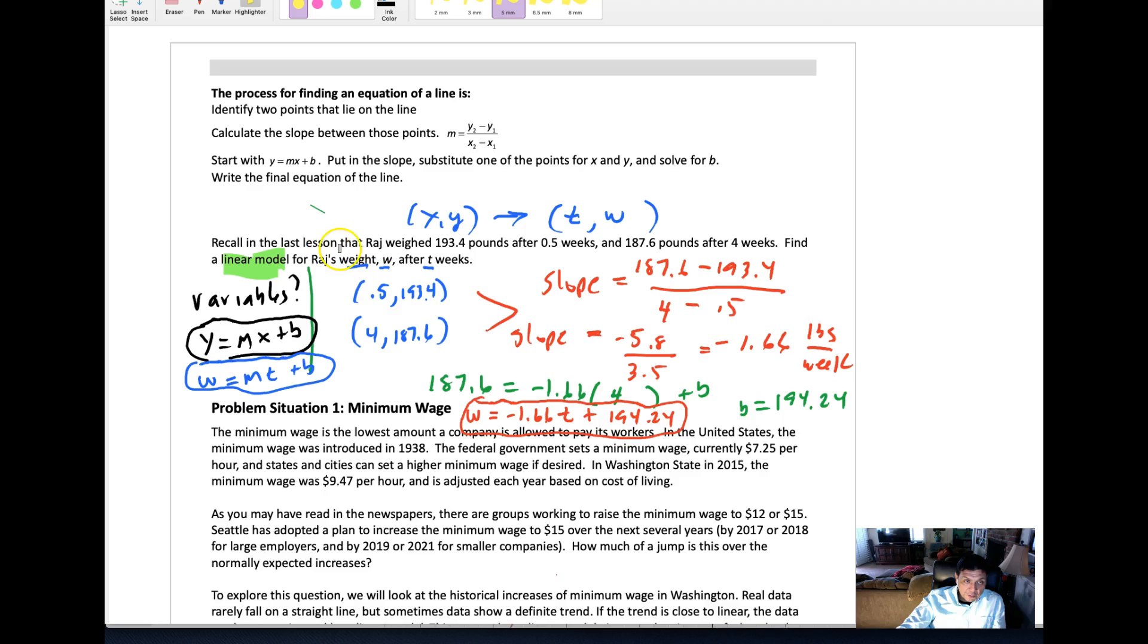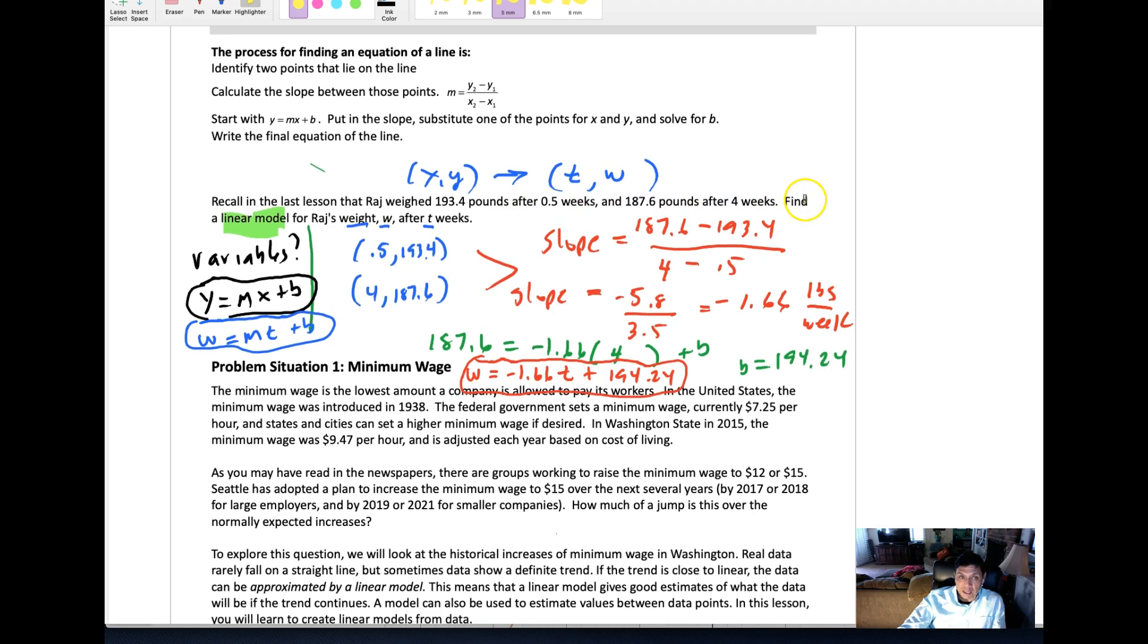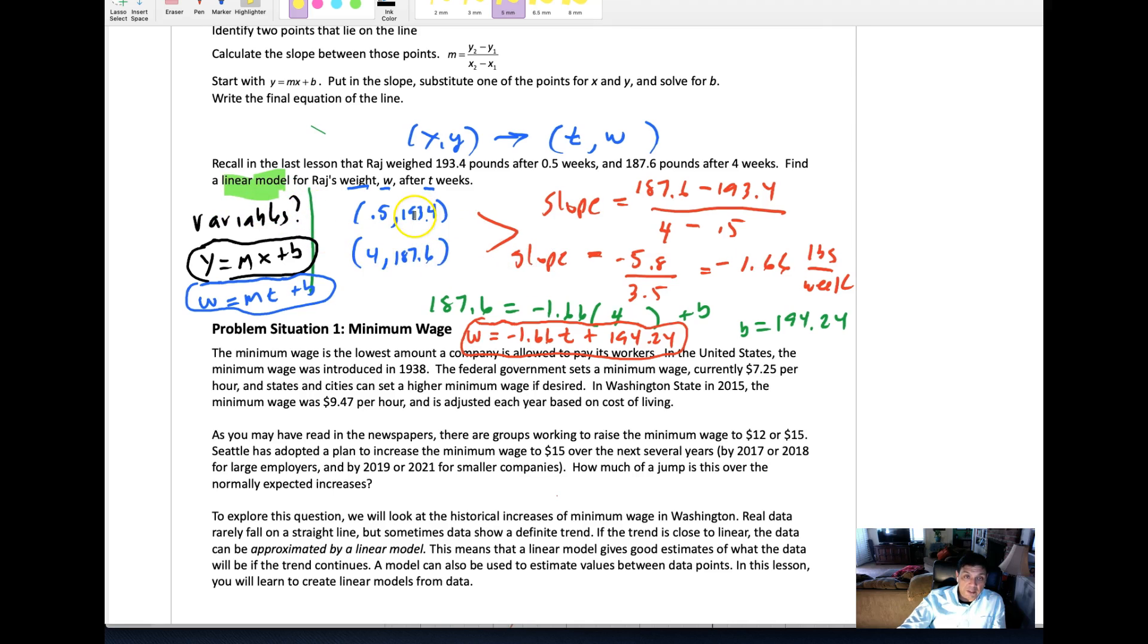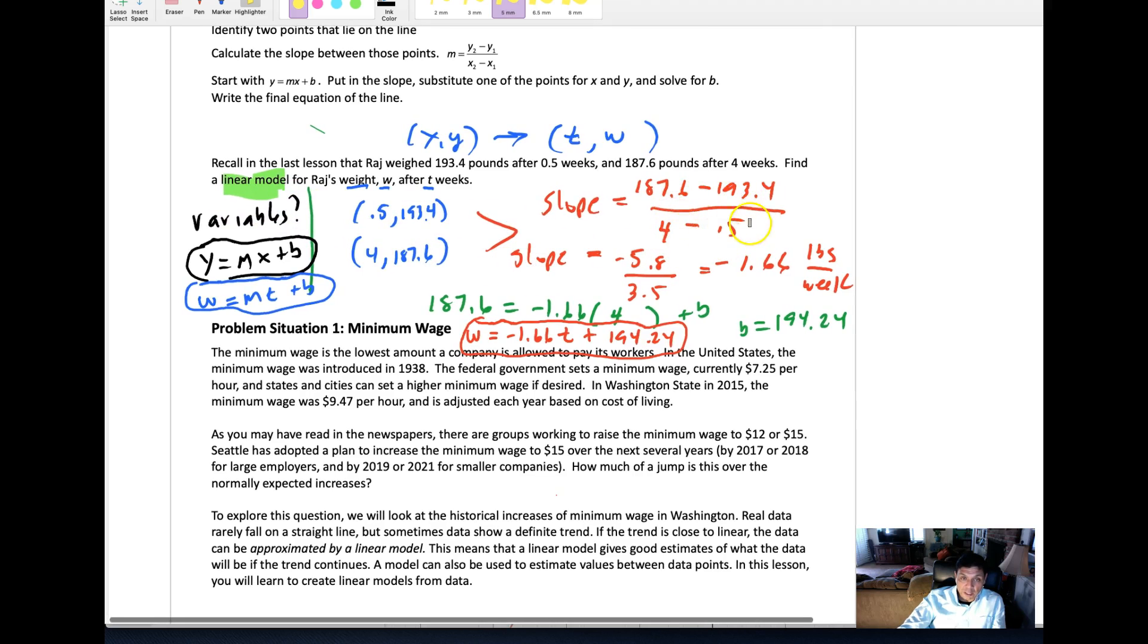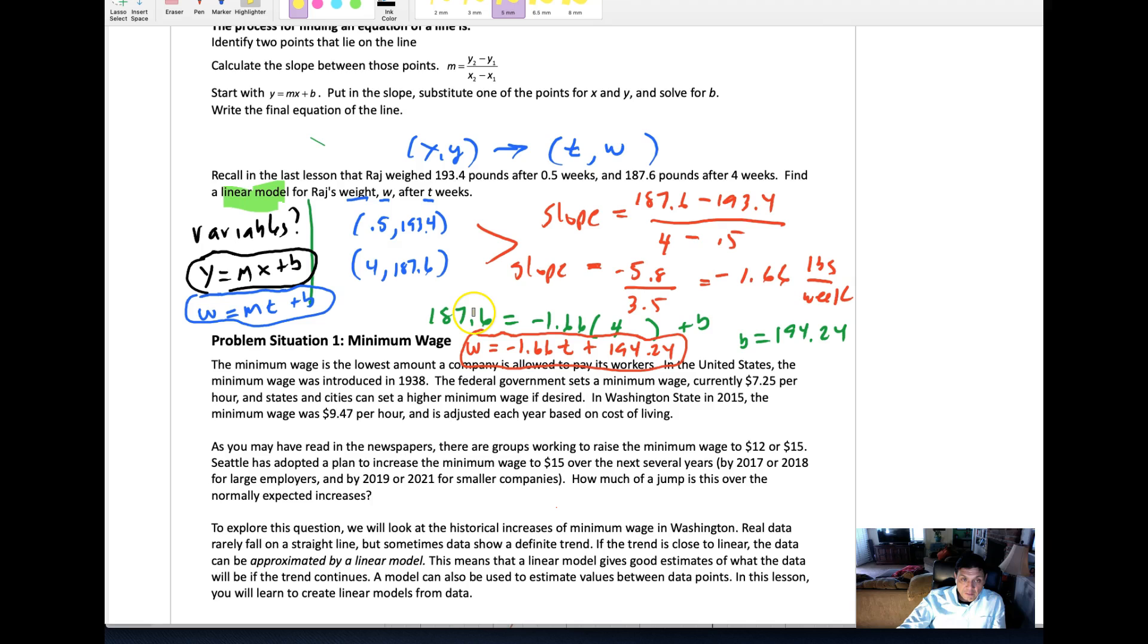Here's an example from the last lesson where we had someone trying to lose weight. We have some data points on their weight after a certain amount of time, and then we could go ahead and find the model that represents their weight loss. To first do that, you need to know what the slope is, and so we substitute those values in to find the slope.